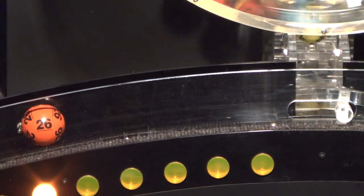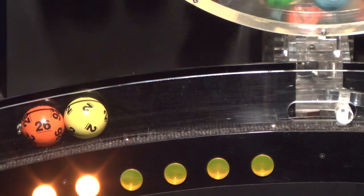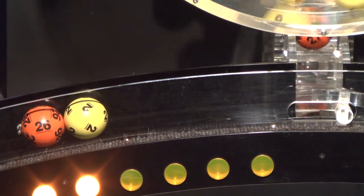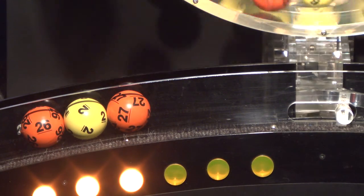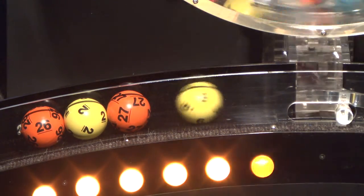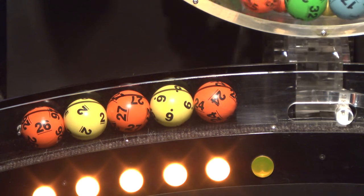Our first number up is number 26. After that we have number 2. And here comes number 27. If you've matched these three numbers, you've already won a prize. Up next is 6. And the final ball in this sequence is number 24.